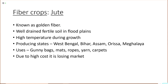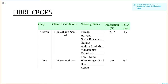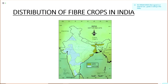Jute is also called the golden fiber. It requires well-drained fertile soil and high temperature during its growth. West Bengal, Bihar, Assam and Orissa are the major producers of jute. Products made from jute include gunny bags, mats, ropes, yarn and carpets. However, jute is not much in demand today as it is coming into competition with synthetic fiber, which people prefer, so the market demand for jute is declining.